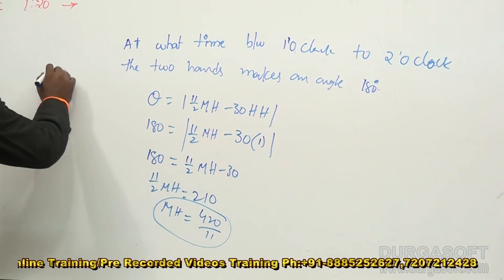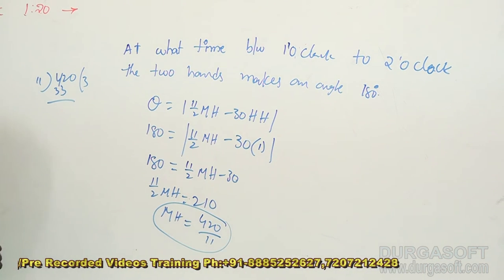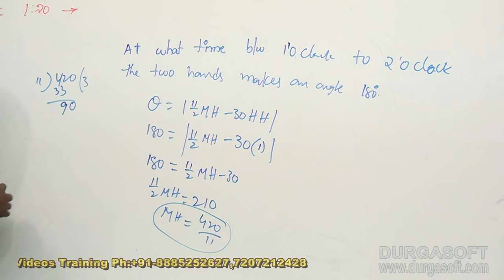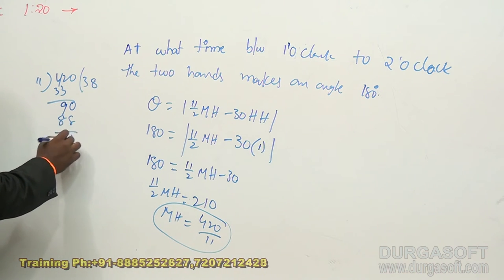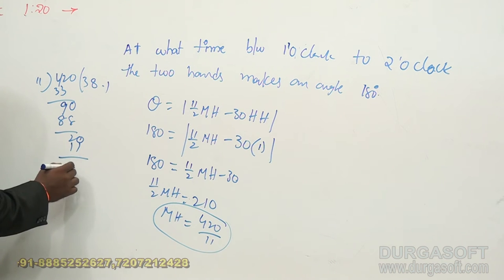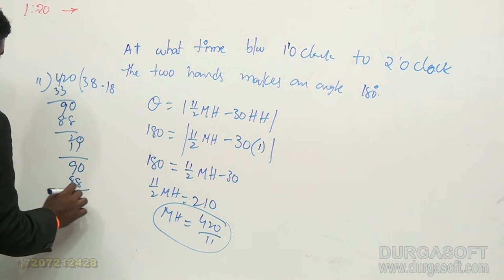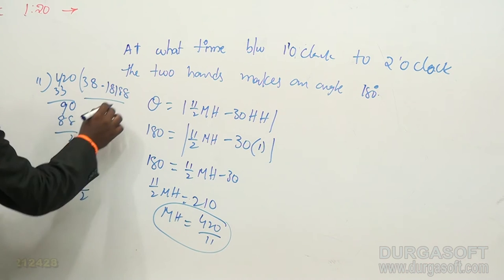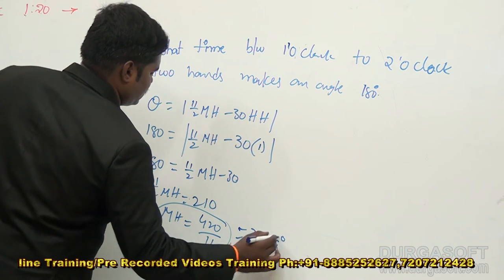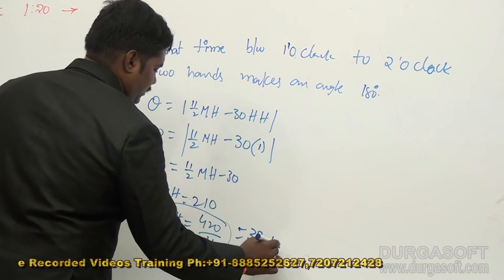420 divided by 11: you get 38 with a remainder of 2. So the minute hand is at approximately 38.18 minutes, which means the time is 1 hour 38.18 minutes. This can also be written as 38 and 2/11 minutes. The 2 has to be divided by 11, and that fraction of a minute can be converted to seconds by multiplying by 60.